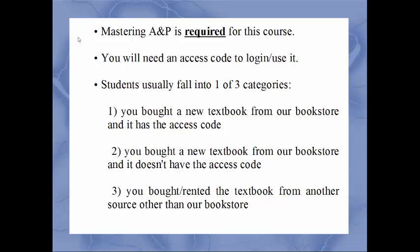You will need an access code to log in and use Mastering A&P. Students typically fall into one of three categories: you bought a brand new textbook from the campus bookstore and it has an access code; you bought a new textbook from the bookstore but it doesn't have the access code; or you either rented the book or bought it from somewhere other than our bookstore, like Kindle or Amazon.